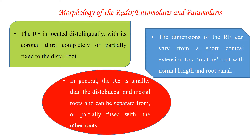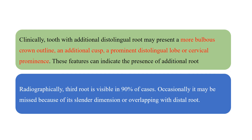Regarding morphology: radix entomolaris is located distolingualy, and its coronal third can be completely or partially fused to the distal root. Its dimensions vary from a short conical type to a mature root. The length of the radix entomolaris root and root canal is generally smaller than the distobuccal and mesial roots, and it can be either separate or fused with other roots.